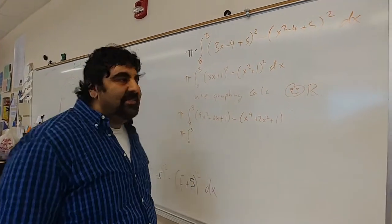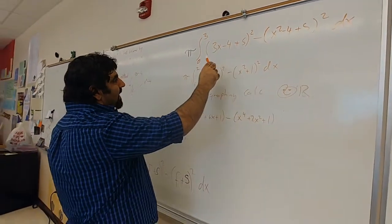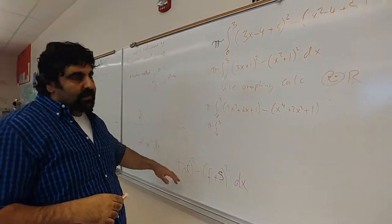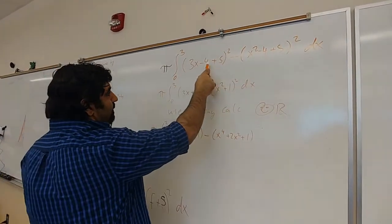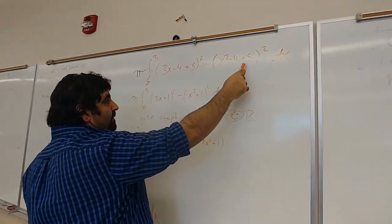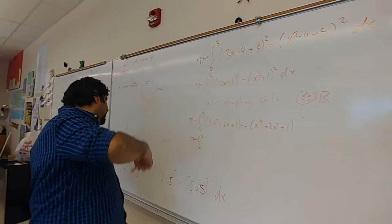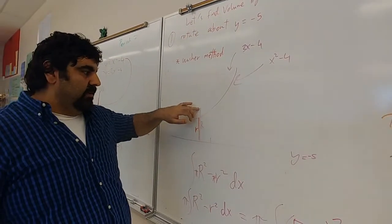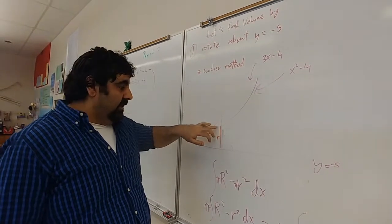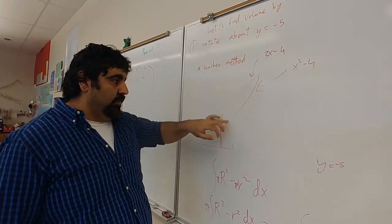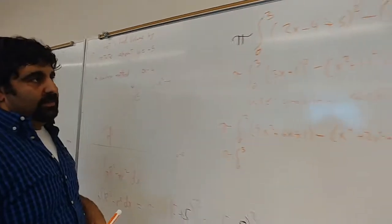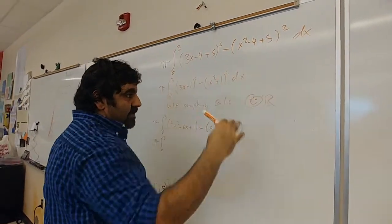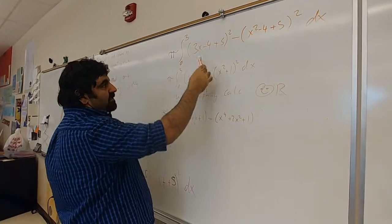So I went ahead and plugged in the functions. My big radius happened to be the line, so I did the line function plus 5, and then the parabola function plus 5. If you look at the picture, the big radius happened when you use the line, and then the smaller radius was when you used the parabola. So I made sure I added 5 for the reasons already mentioned, and then I just simplified a little bit.